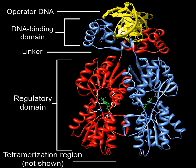Other transcription factors differentially regulate the expression of various genes by binding to enhancer regions of DNA adjacent to regulated genes. These transcription factors are critical to making sure that genes are expressed in the right cell at the right time and in the right amount, depending on the changing requirements of the organism.